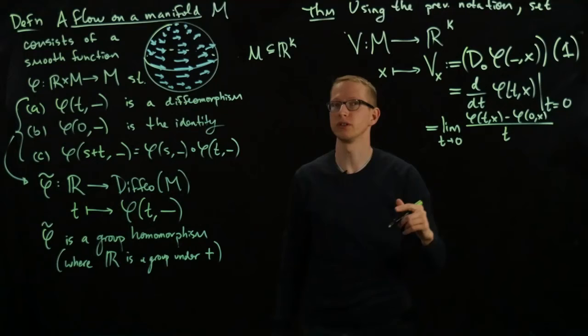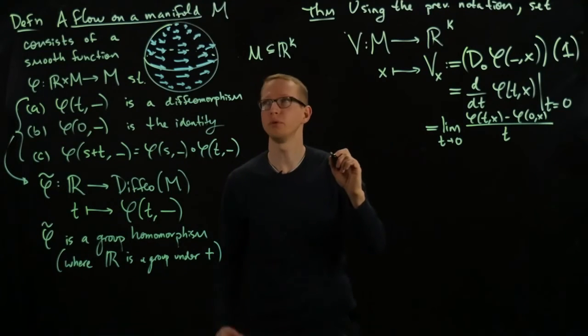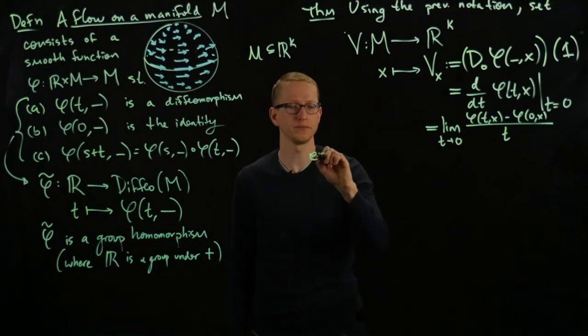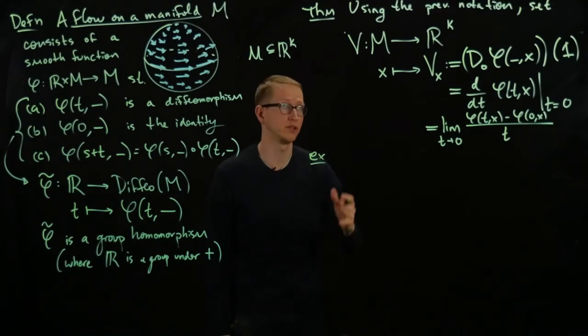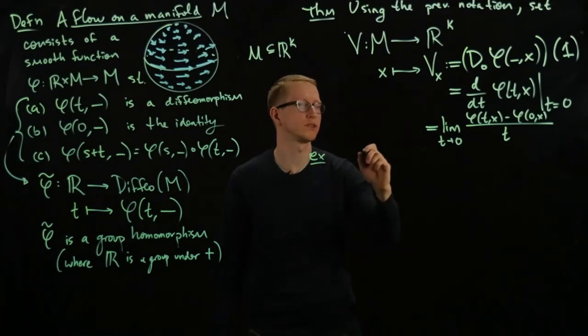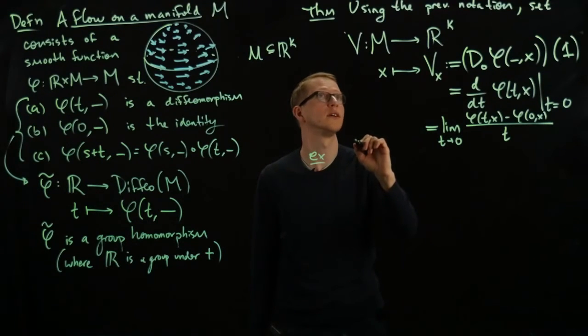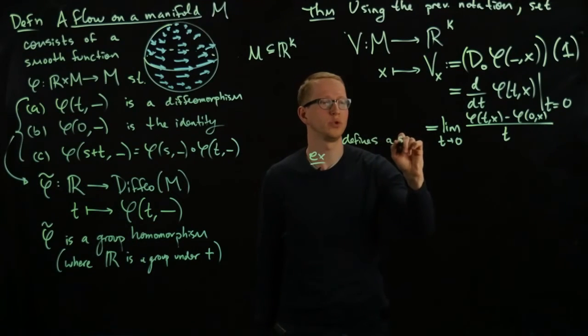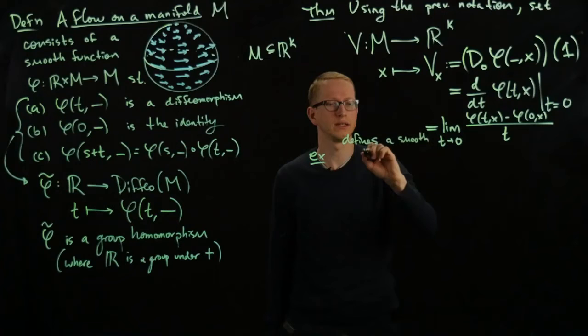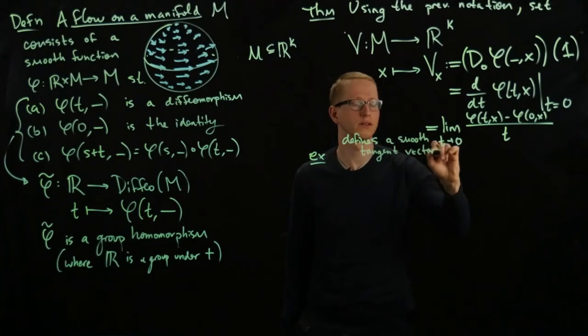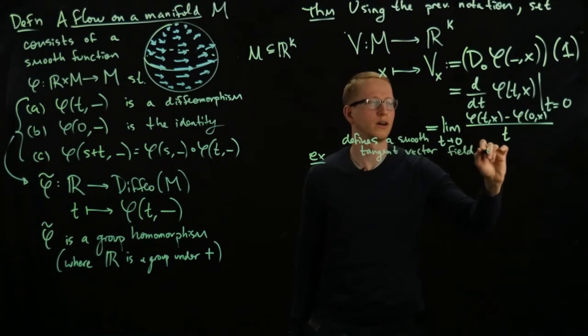This is a vector field. And one example we'll take as this sphere. And it's a smooth, not only is it, this is a smooth tangent vector field, let me say that, defines a smooth tangent vector field on M.